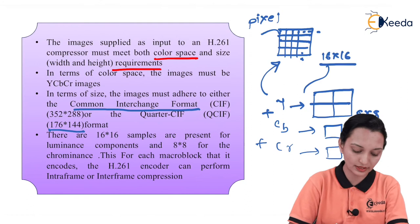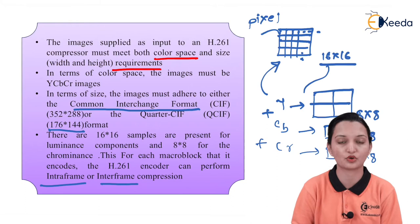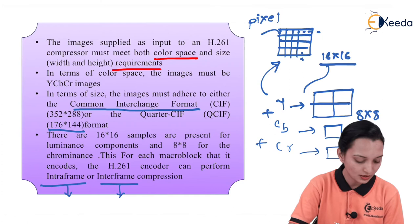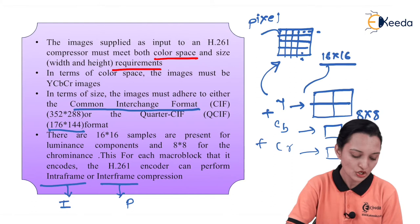There are 16x16 samples for the luminance component and 8x8 samples for the chrominance component for each macroblock. The H.261 encoder can perform intraframe and interframe compression. Once the macroblocks are designed, the data must be encoded. The given data can be encoded using two types of frame structure: intraframe, represented by the notation I, and interframe, represented by the notation P.